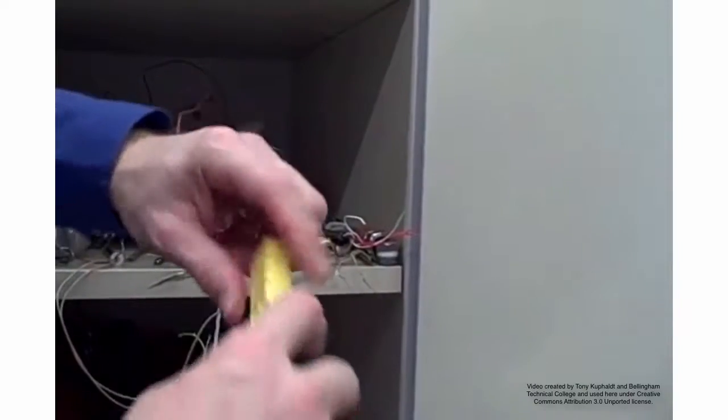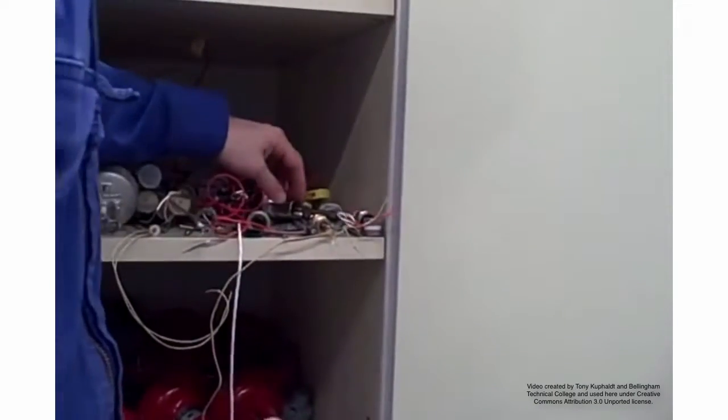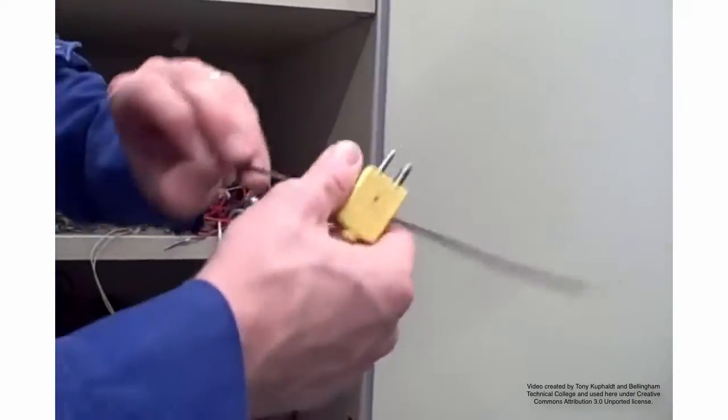So that's a type K with a pre-molded plug. And as I mentioned before, that thermocouple I was holding onto, that little piece of type J wire, is a homemade thermocouple. All we have to do is twist the ends together and voila, we have one.